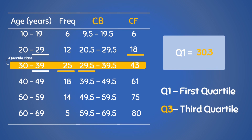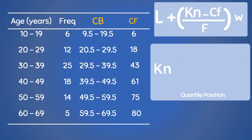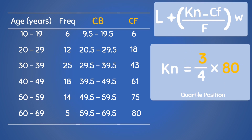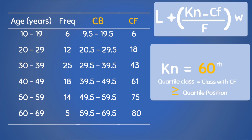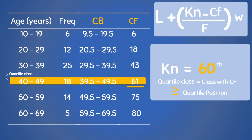Now let's compute the third quartile, Q3. K is I divided by 4, and for Q3, I equals 3, so K is 3 over 4. N is 80, so KN is 3/4 multiplied by 80, which gives us 60. Our quartile position for the third quartile is at the 60th individual. The cumulative frequency just above 60 is 61, so our quartile class is the 40 to 49 class. This means the 60th individual has an age that falls within this class.